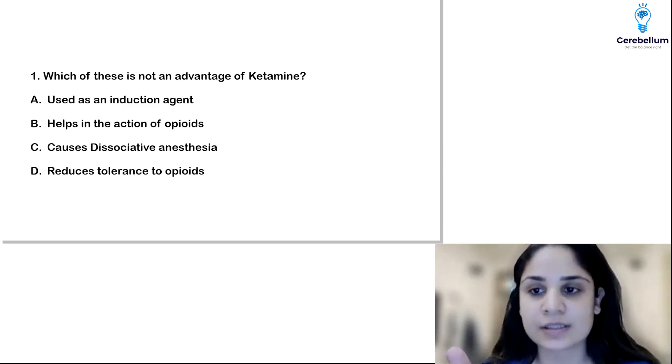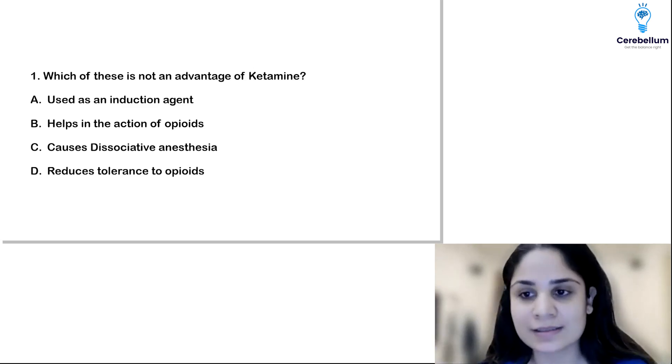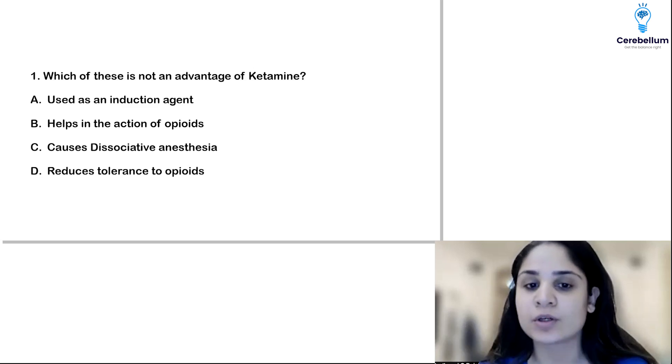then A, used as an induction agent, yes. B helps in the action of opioids, yes. Ketamine has an analgesic effect, so it also helps whenever you want to use it along with opioids to reduce the use of opioids as analgesia.